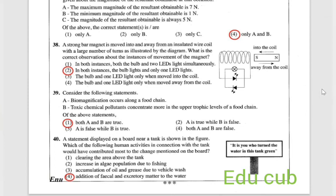Question 39: consider the following statements. Biomagnification occurs along food chains. Toxic chemical pollutants concentrate more in upper trophic levels of the food chain. Biomagnification occurs along the food chain, it is correct. Toxic chemical pollutants concentrated more in upper trophic levels in food chain, it is also correct. So answer is A and B.